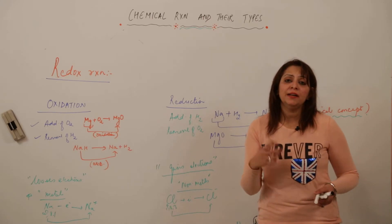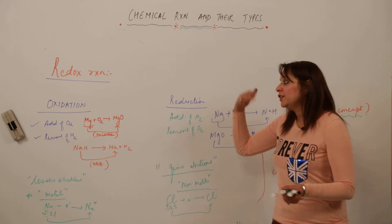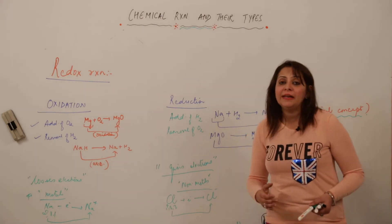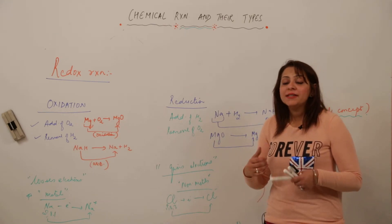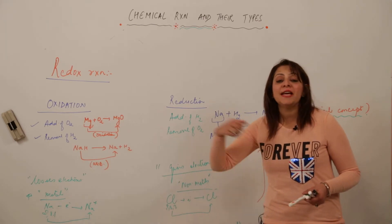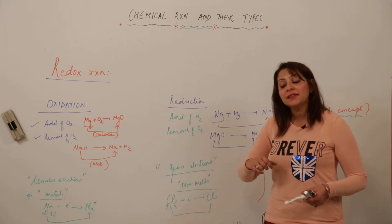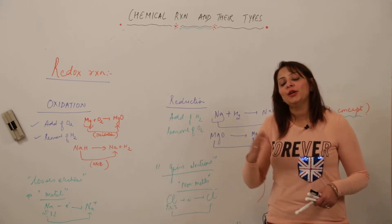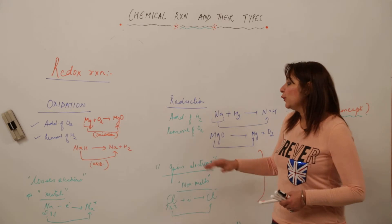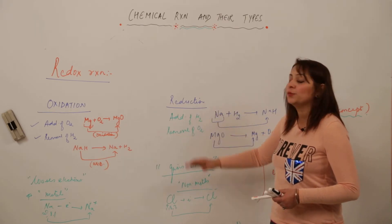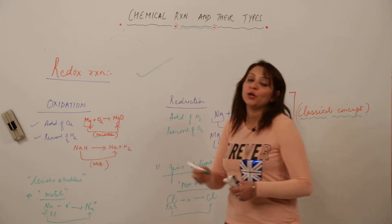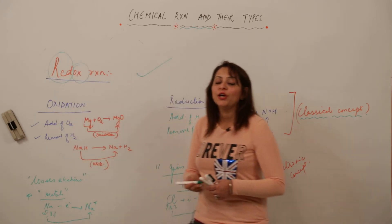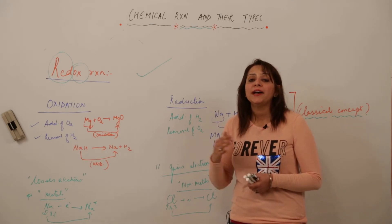You will be surprised to know that oxidation does not occur on its own and reduction does not occur on its own. Oxidation occurs at the cost of reduction and reduction occurs at the cost of oxidation. In any reaction, if oxidation is taking place, simultaneously reduction will be taking place — because if an element loses electrons, there must be another element to accept those electrons. So oxidation and reduction go hand in hand. The reaction in which both oxidation and reduction occur simultaneously is called a redox reaction — 'red' comes from reduction and 'ox' from oxidation.